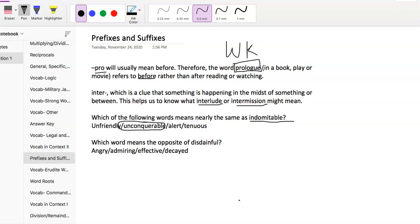Let's do one more. They will sometimes ask you opposite questions—opposite of disdainful. When we're looking at answer choices, just to remind you, on some of the easier sections they will have two answers that mean the same thing. As we get to some of these harder sections, sometimes it's harder to find that. The opposite of disdainful—angry, admiring, effective, decayed.